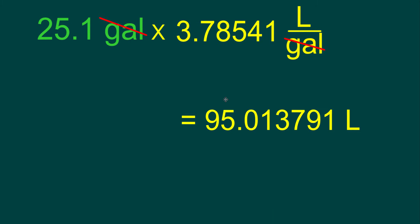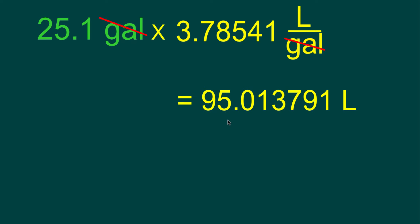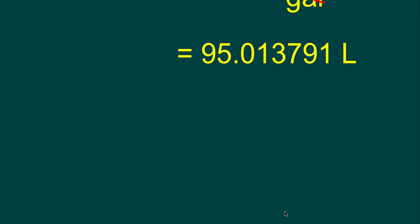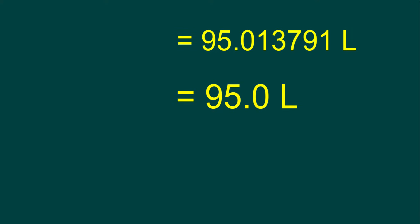we get 95.013791 liters. We only have 3 significant digits, which means that we will round this to 95.0 liters. So, that means that 25.1 gallons is equivalent to 95.0 liters.